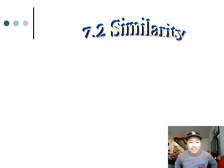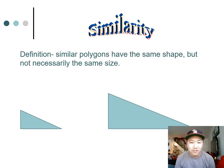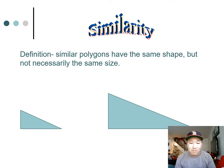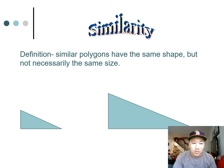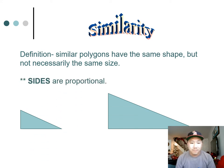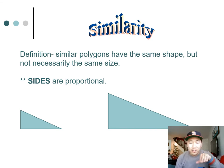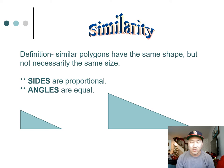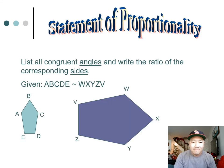Here is the definition for similarity: similar polygons have the same shape but not necessarily the same size. As you can see, we have two triangles and one is much smaller than the other, but they do share a lot of properties. Their sides are proportional, meaning they make a nice ratio, and the angles are always equal — if you match up each of the angles, they are always equal to each other.